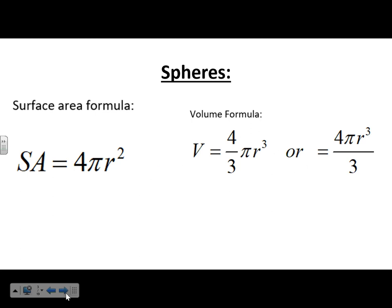Just like with cones and cylinders, if you want to type the volume into your calculator, you can enter 4/3 as a fraction, or you can do 4 times π times r³ and then divide by 3. I like to do it in two steps: compute 4πr³ first, then divide by 3.